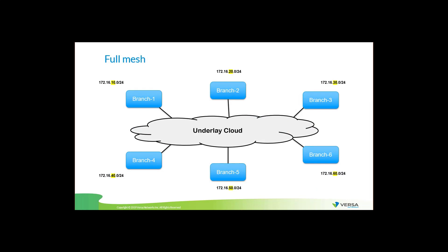Let's begin with the first simple topology. Let's imagine that we have six branches connecting six different sites. I purposely highlighted the subnet for each of them — we have branch one with the address 192.168.10.0/24 and others with 20, 30, 40 and so on. In this case, if any of the devices from branch four would like to communicate with devices in branch one, the communication and the overlay tunnel will be built directly between those devices. Similarly, if branch four would like to go to branch two, the tunnel will be built directly between them, and the same applies to branch six and from the perspective of branch five. So we have full mesh connectivity in the case of a full mesh network.